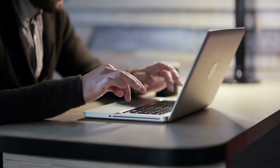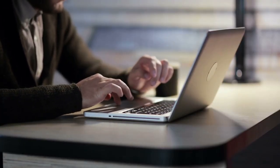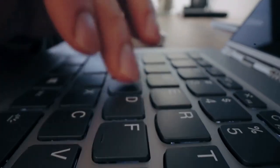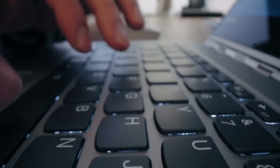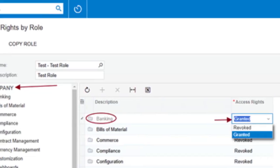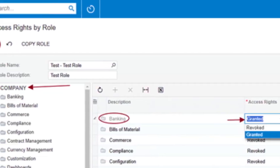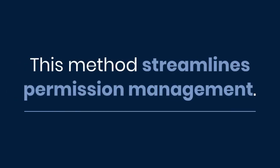This process allows for precise control over user permissions. If you need to grant or restrict access for an entire module rather than individual screens, there is a quicker method. In the Access Rights by Role screen, click on the company folder and change the access rights column to Granted or Revoked for the entire module. Save your changes. When Test User logs back in, they will have full access to the entire module rather than just individual screens. This method streamlines permission management.